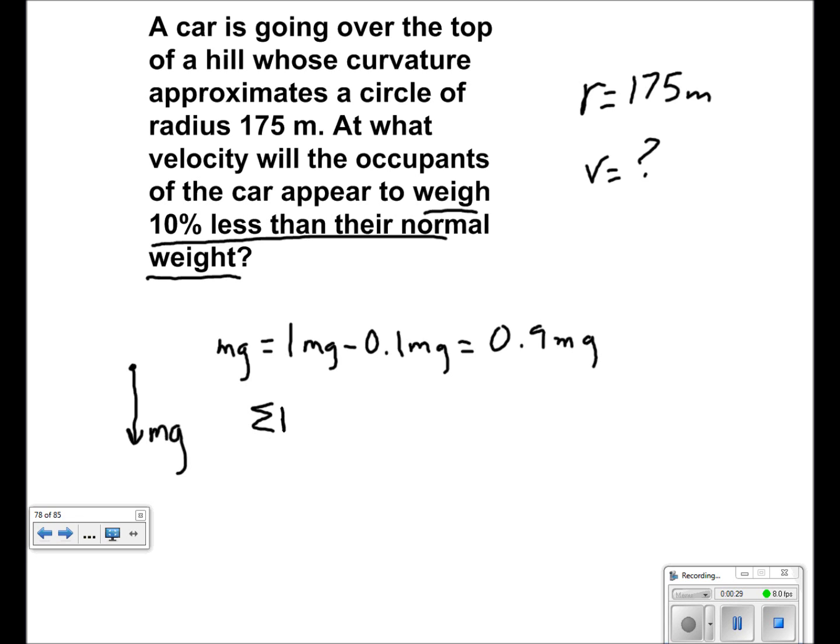The sum of the forces is equal to the apparent weight, which is equal to mv squared over r. We can cancel out the m's, getting 0.9g is equal to v squared over r.